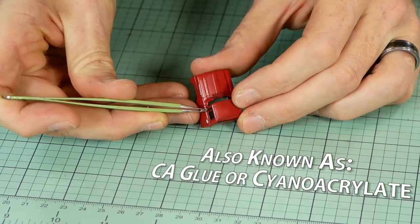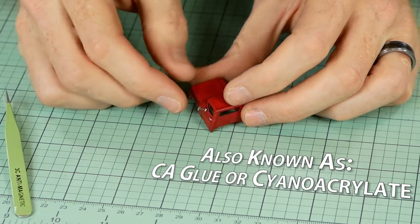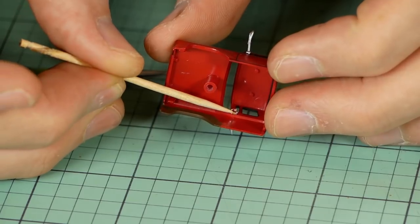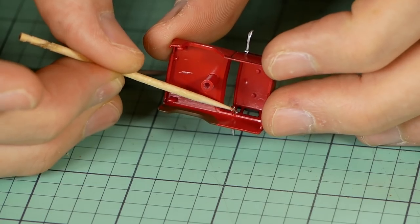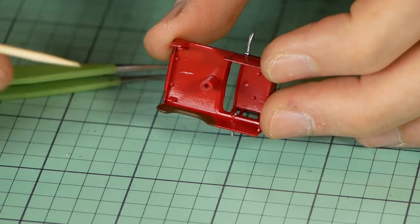Super glue is used to attach the mirrors and once in place a little extra super glue is added from the inside to ensure they hold nice and tight. Mirrors are often the first thing that go missing from models like this.